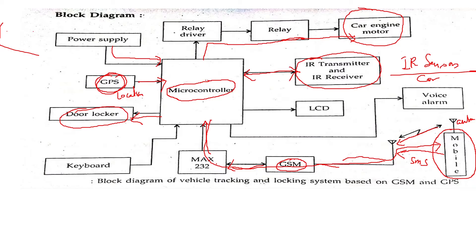With all this information, the microcontroller determines whenever the car is taken away by the thief or has gone under the process of theft. In that case, whenever the owner sends an SMS from his mobile, the microcontroller gives instruction to its unit within the car to stop the car engine and also ensures that the doors of the car are locked. This is the block diagram of vehicle tracking and locking system based on GSM and GPS.